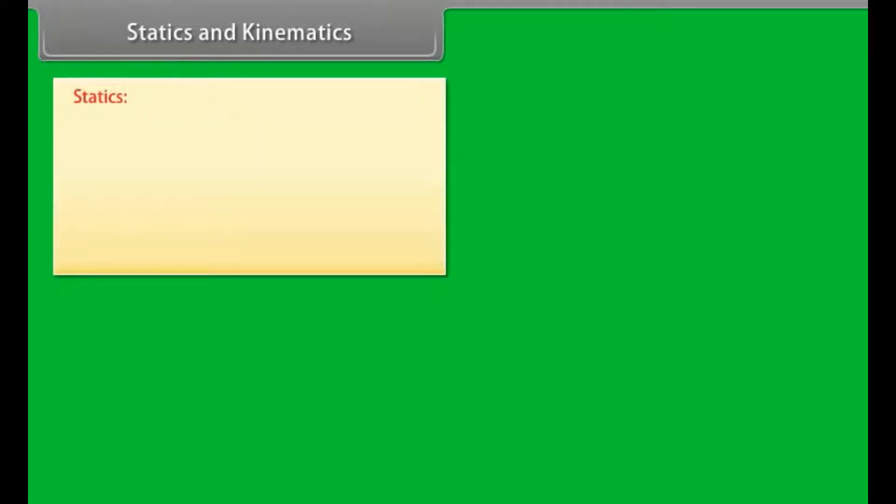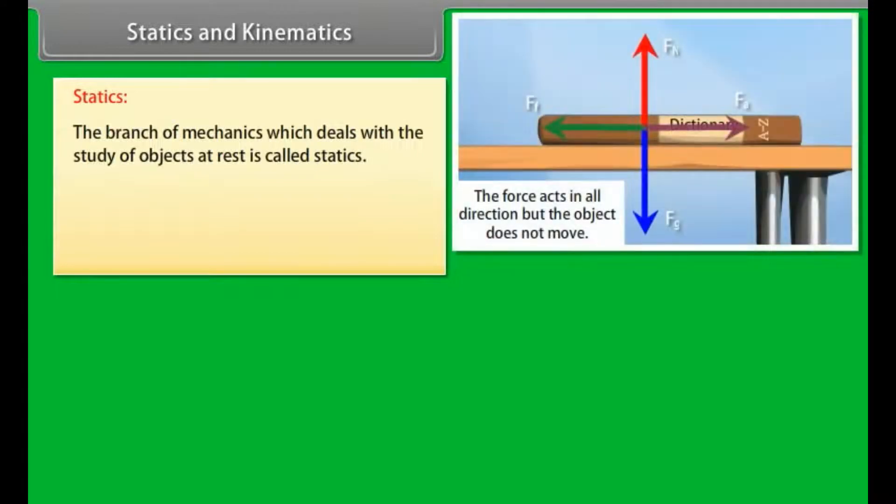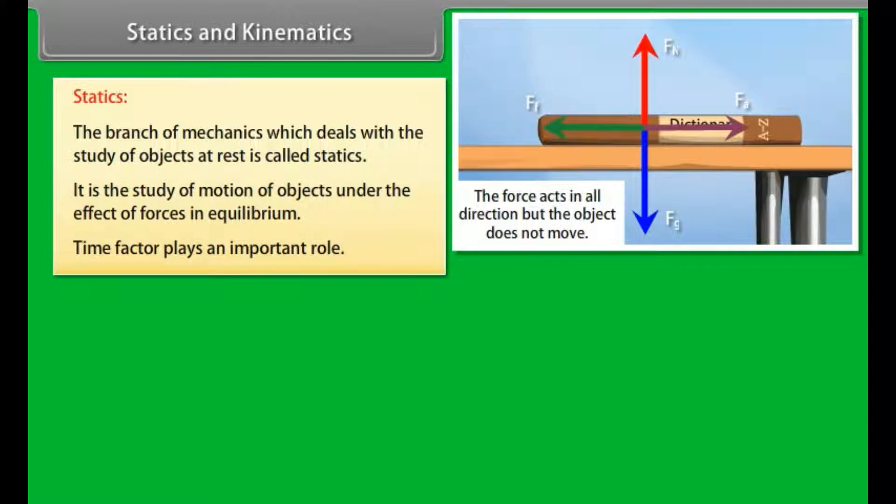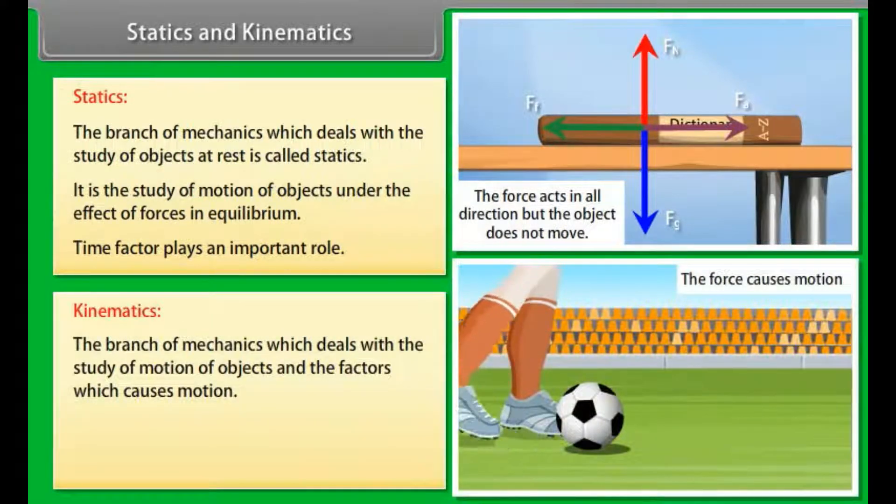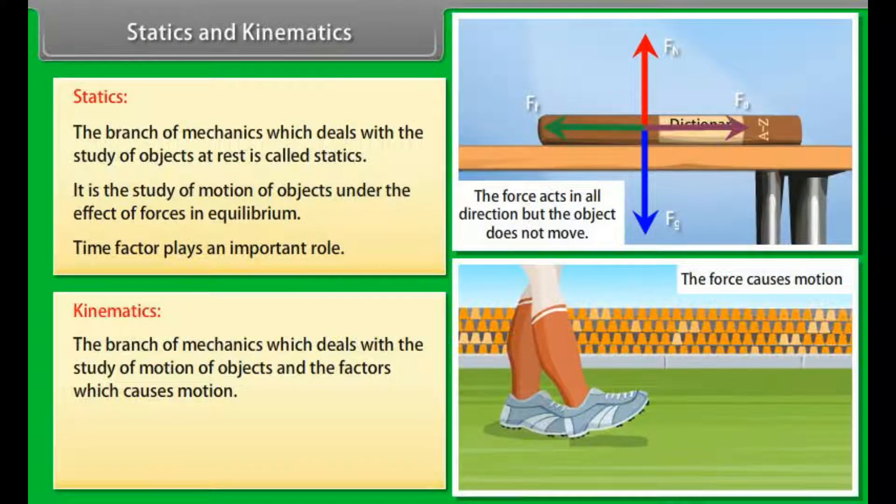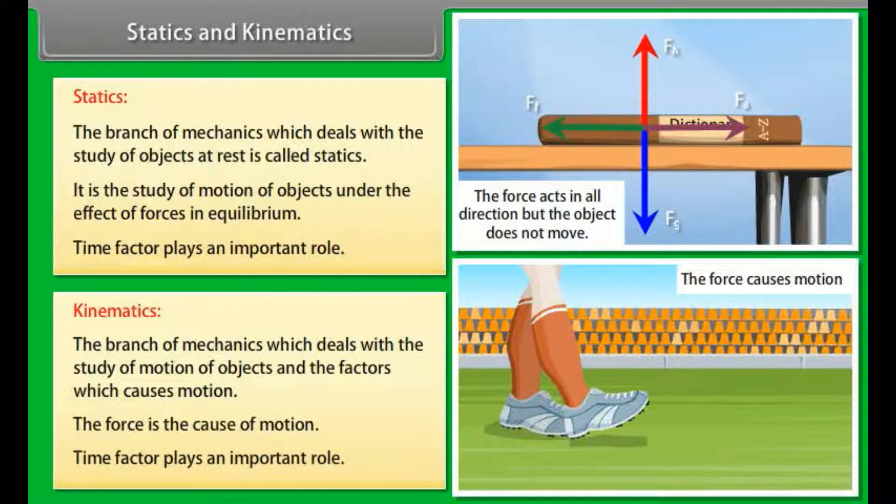Statics and Kinematics. Statics: The branch of mechanics which deals with the study of objects at rest is called statics. It is the study of motion of objects under the effect of forces in equilibrium. Time factor plays an important role. Kinematics: The branch of mechanics which deals with the study of motion of objects and the factors which causes motion. The force is the cause of motion. Time factor plays an important role.